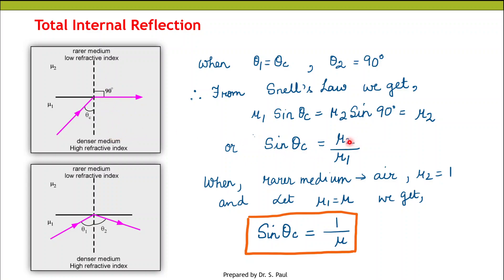So sin θc = μ2/μ1, and any ray incident at an angle greater than θc will be totally internally reflected. From this, if we take the rarer medium as air, μ2 will be 1, and if we take μ1 as μ, then sin θc = 1/μ.